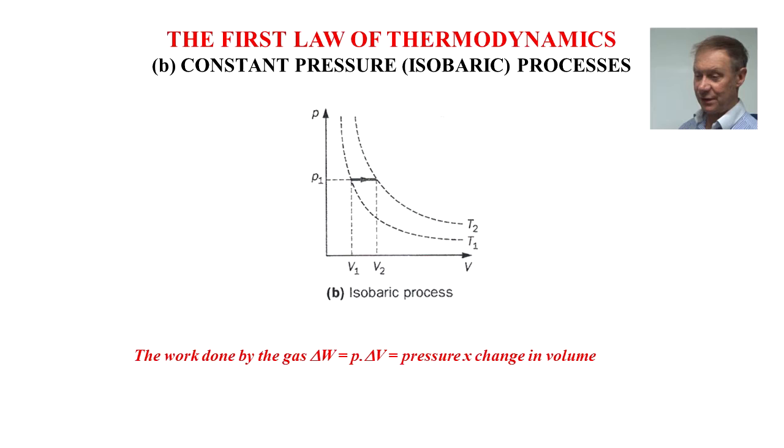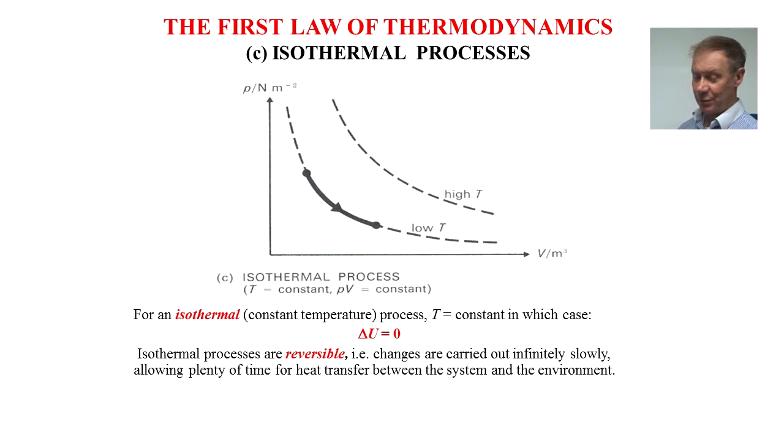In an isothermal process, this is Boyle's law behavior. Temperature is constant and the product of PV is constant. On this occasion, at constant temperature, delta U is zero. Isothermal processes are reversible, so changes are carried out infinitely slowly, allowing plenty of time for the heat transfer between the system and the environment.